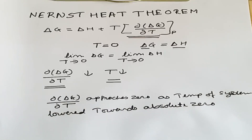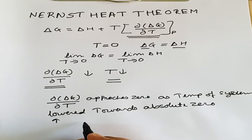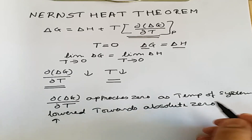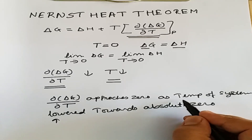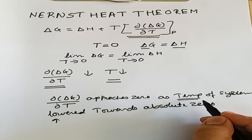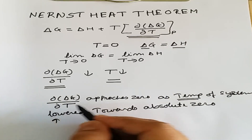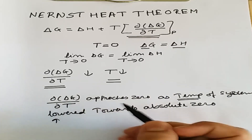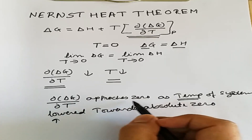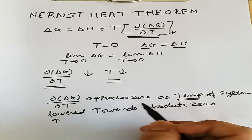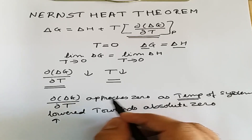This statement is known as the Nernst Heat Theorem. It is called the heat theorem because we are taking heat out of the system. As we take heat out of the system, the temperature falls, and as the temperature falls, the value of the change in free energy with respect to temperature decreases, approaching zero.